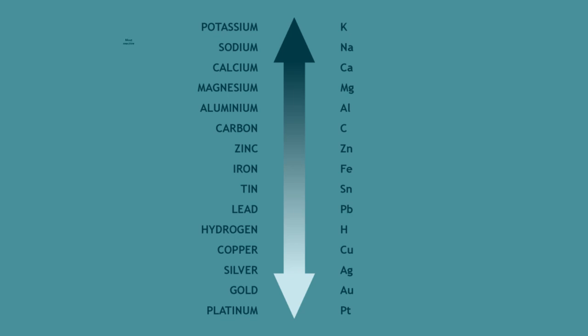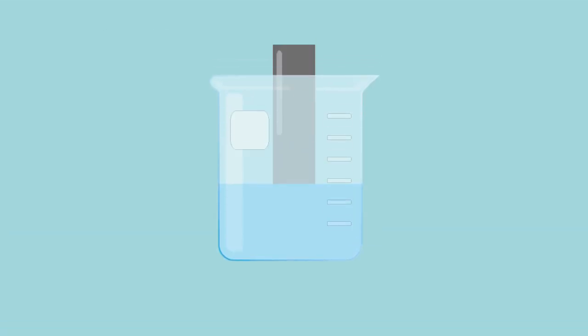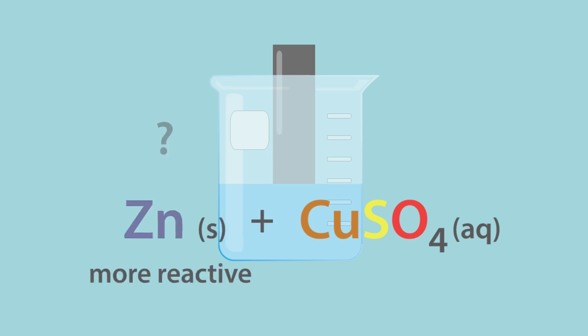The reactivity series shows which metals are more reactive. For this reaction, let's use copper sulphate solution and zinc metal. Zinc is more reactive than copper. What is going to happen?